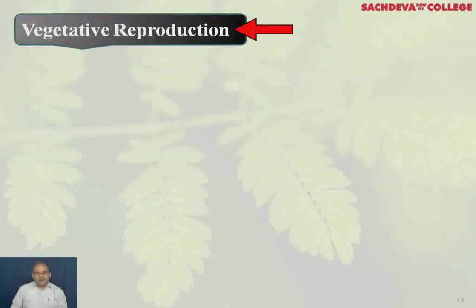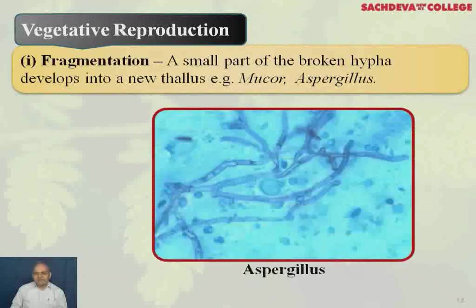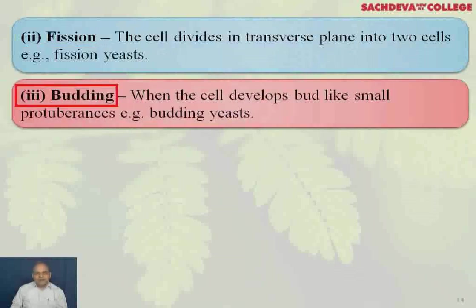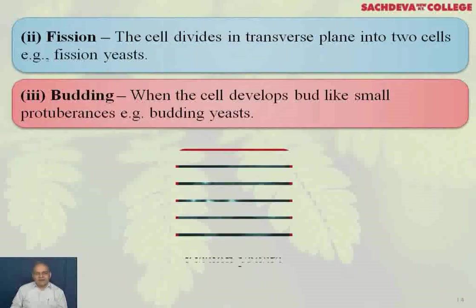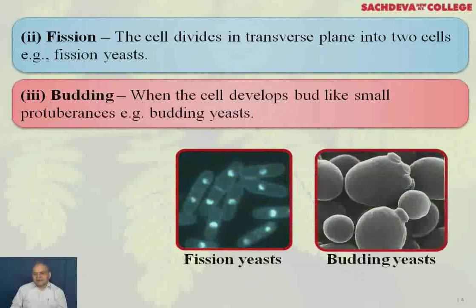Vegetative reproduction occurs by fragmentation, where a small part of broken hyphae develops into a new thallus (example: Mucor, Aspergillus); by fission, where the cell divides in the transverse plane into two cells (example: fission yeast); and by budding, where the cell develops a small protuberance (example: budding yeast). This is fission yeast and this is budding yeast.